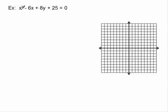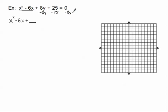Since this is a parabola, it's going to be the method of completing the square, but it's just a little bit different from what we did with circles. The first thing we are going to do is group the quadratic term and its linear term together, leaving a space for a blank. All the other terms go to the other side, so we subtract 8y and subtract 25 to the other side.